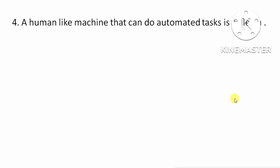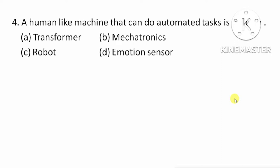Next question: a human-like machine that can do automated tasks is called a — means, एक इंसानों की जैसे machine जो automated कार्य को कर सकती है, उसे कहा जाता है। Option A: Transformer. Option B: Mechatronics. Option C: Robot. Option D: Emotion Sensor. The right answer is Option C, Robot.